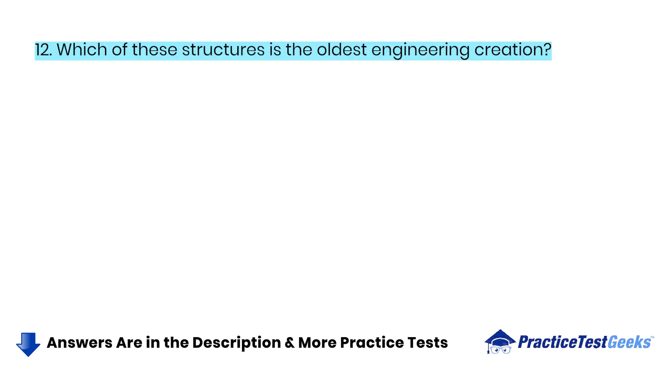Which of these structures is the oldest engineering creation? A. Irrigation in Rome. B. Cannot. C. Appian Way. D. Egyptian Pyramids.